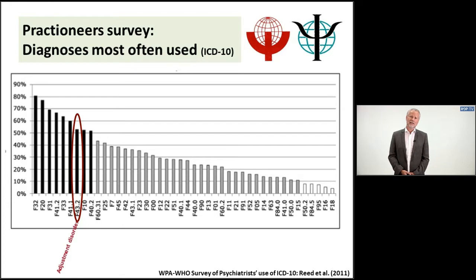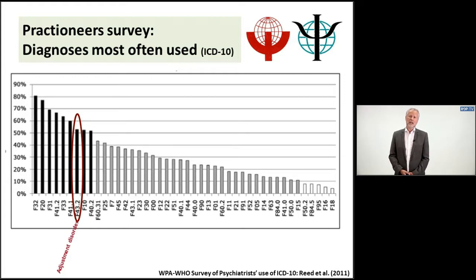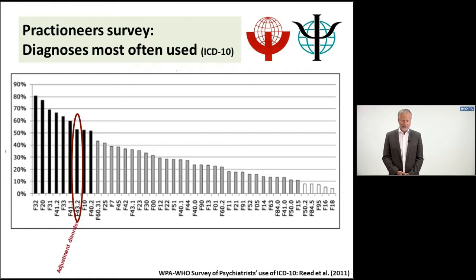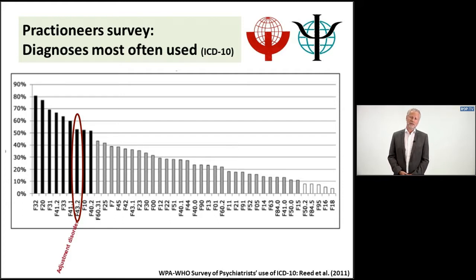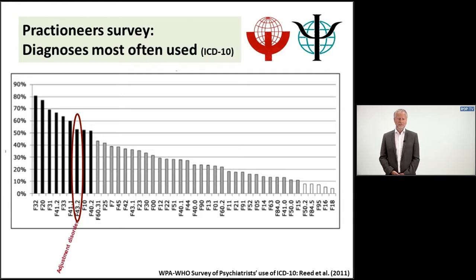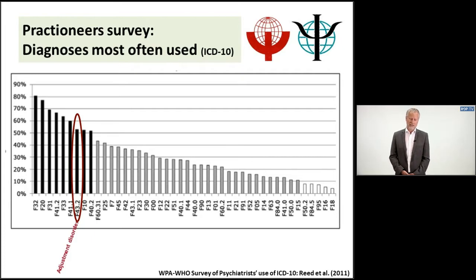The next slide shows that in a survey that preceded the ICD-11 development, many practitioners around the world — over 2,500 — were asked about their most often used diagnosis. You can see that adjustment disorder comes very soon in the rank order of these categories, after affective disorders, after depressive episodes, schizophrenia, and general anxiety disorders. This had been a justification for staying with the adjustment disorder diagnosis, but reformulating its definition.